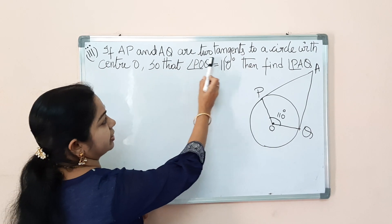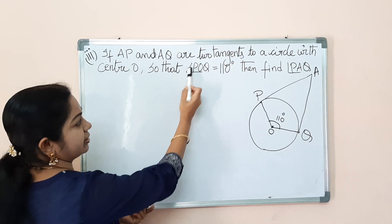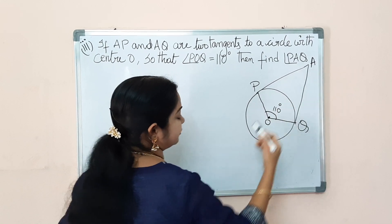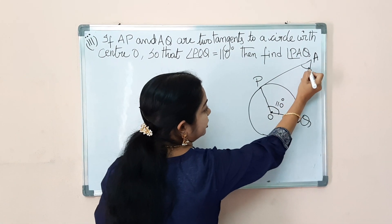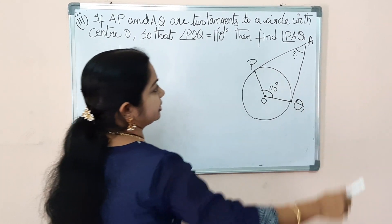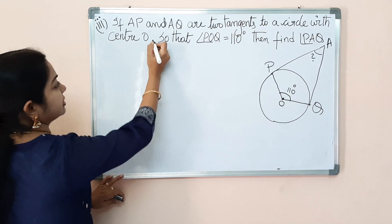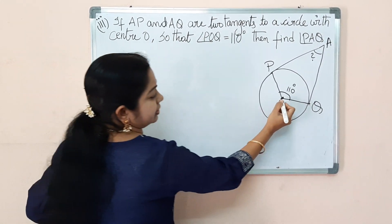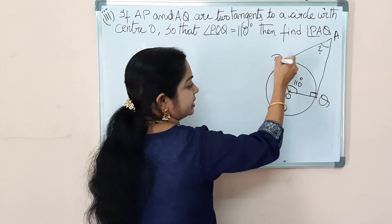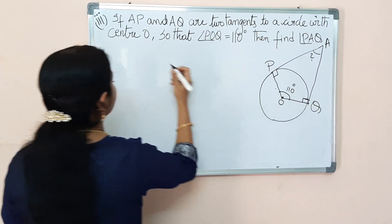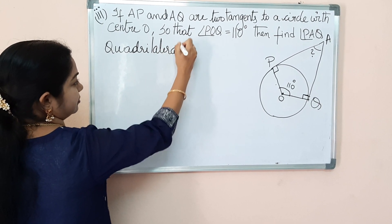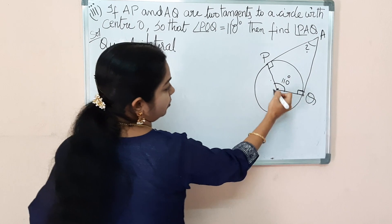Here is a problem from your exercise: If AP and AQ are two tangents to a circle with center O such that angle POA is 110 degrees, then find angle PAQ. We need to find this angle. PA and AQ are the tangents drawn from the external point A. If you observe this figure, there is a quadrilateral formed. Angle POA is 110 degrees, and the angles at the points of contact are right angles because the radius is perpendicular to the tangent.